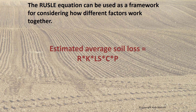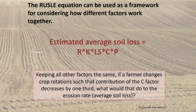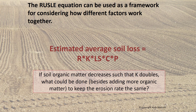This is the overall form of the RUSLE equation. The units are in tons per acre per year. Using the equation: keeping all factors the same, if a farmer changes crop rotation such that the contribution of the C factor decreases by one-third, the erosion rate would decrease by one-third. If the soil organic matter decreases such that K doubles, you would need to decrease the value of any of the other factors by half to keep the erosion rate the same.